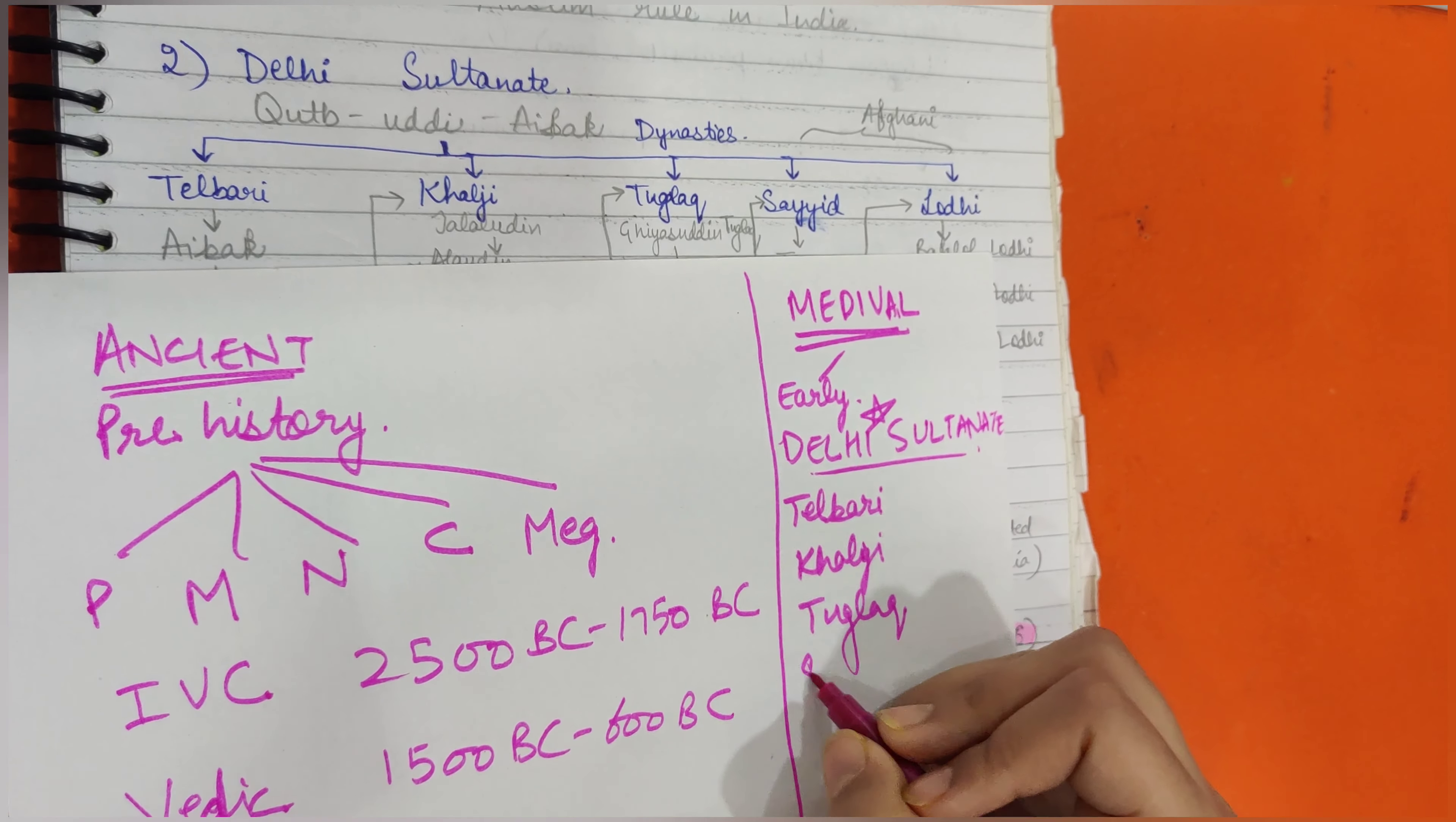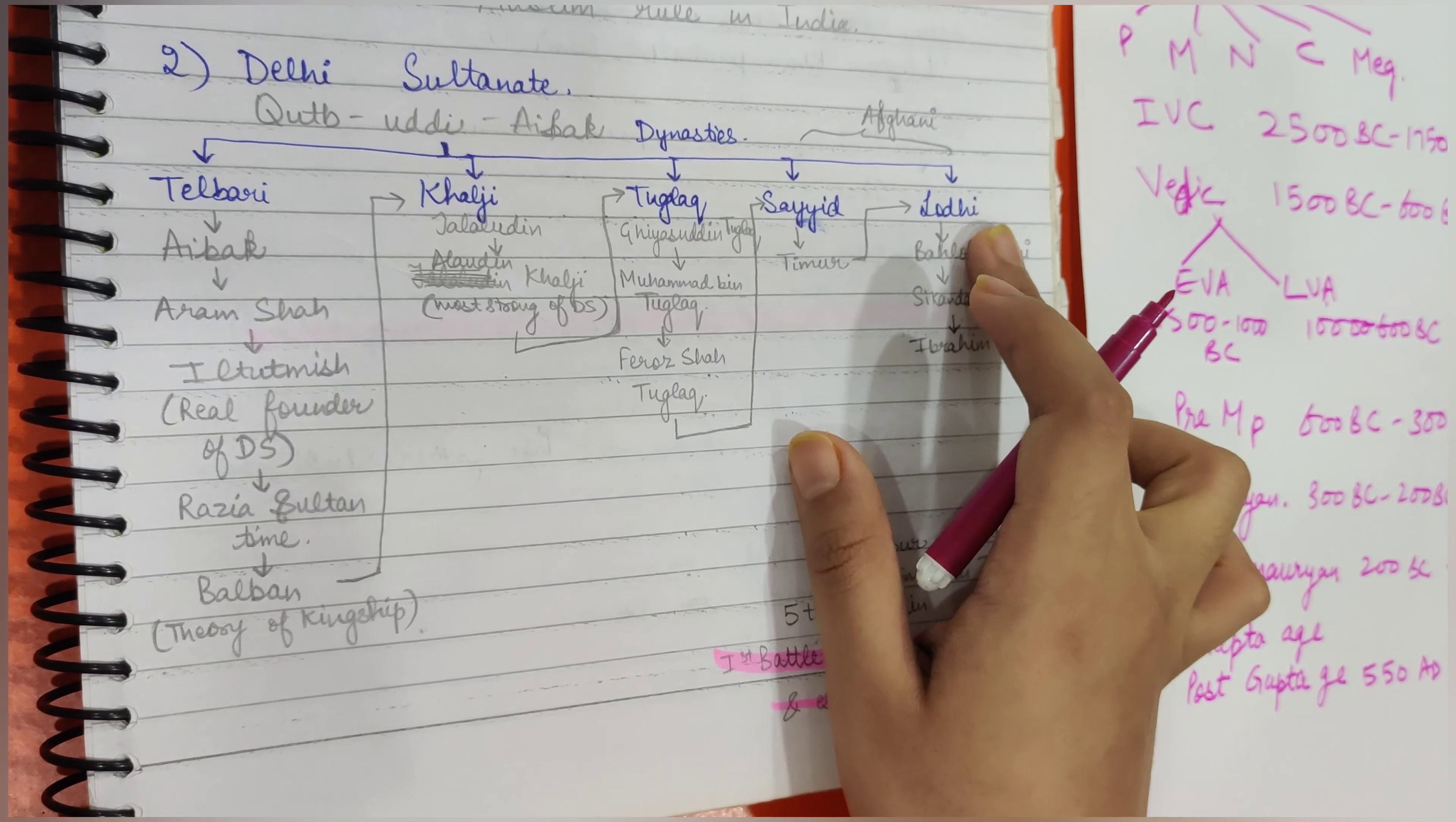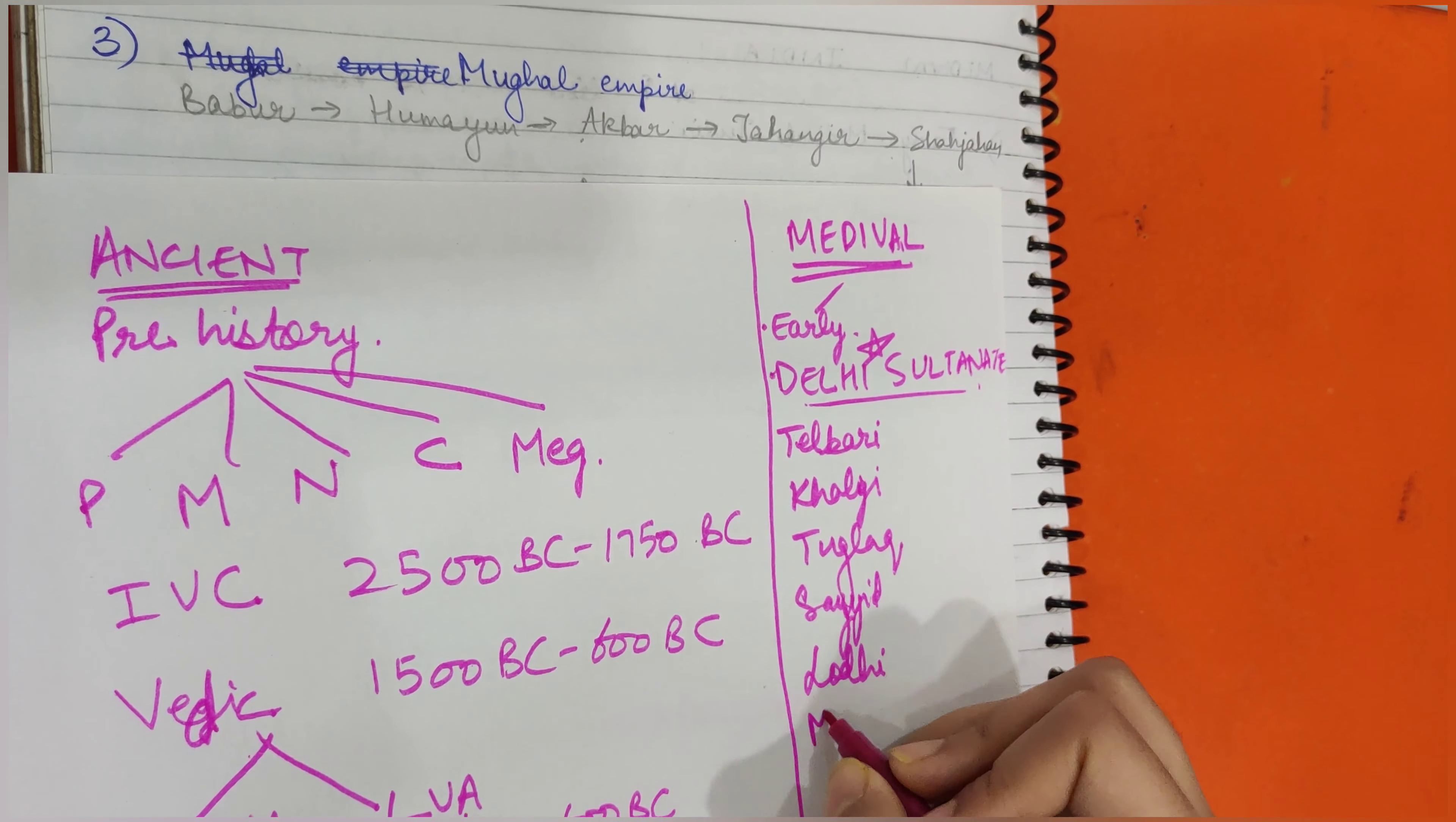Then came the Sayyid dynasty and then came the Lodi dynasty. We'll read about all of these dynasties and all the kings under these dynasties, how one overthrew the other and came into power. After Delhi Sultanate, we'll read about the Mughal Empire.